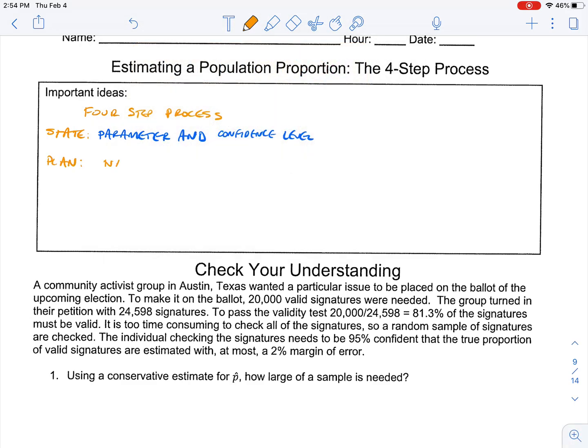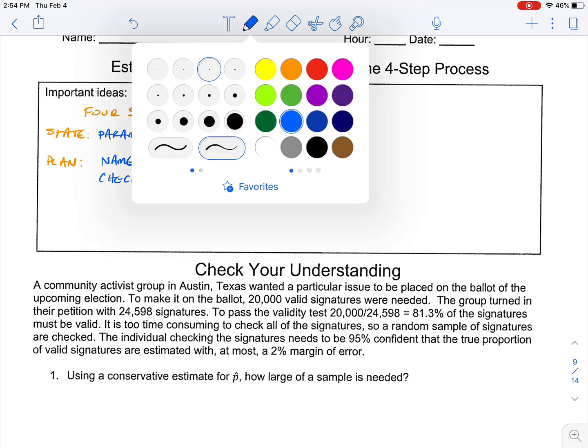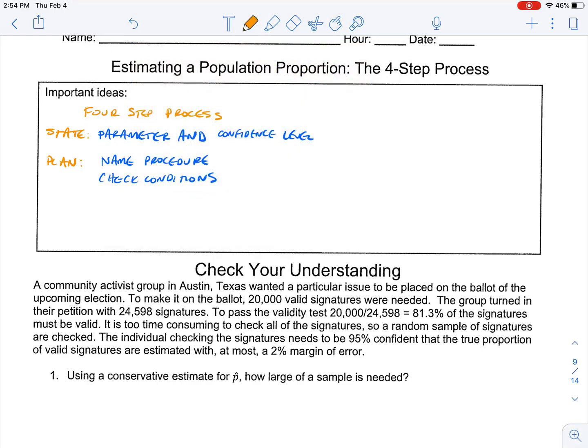Then what we do is we're going to lay out a plan for how to do that. So we're going to name the procedure. Then we're going to check our conditions. Just like a construction worker has to pull their permits first, we have to see if the conditions are right for us to be able to do this process.